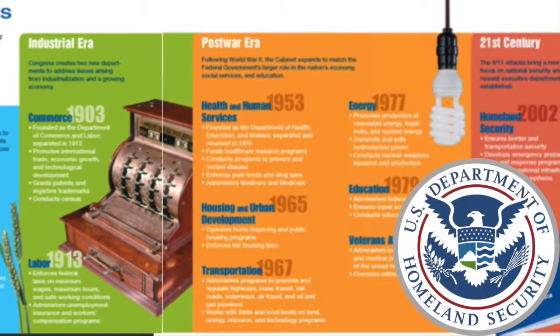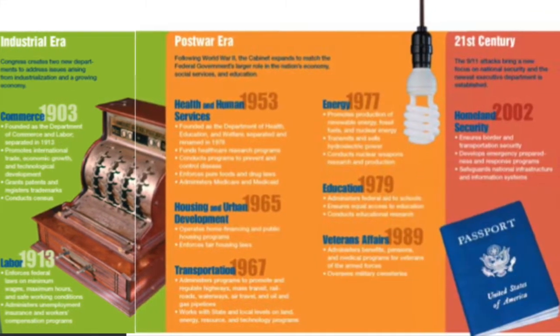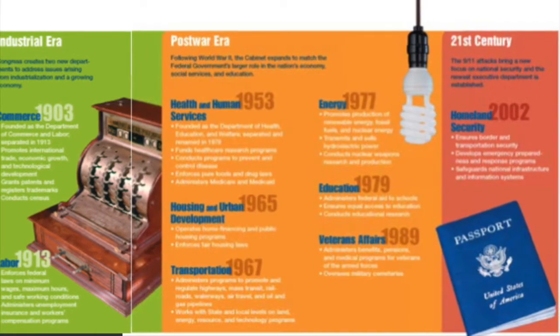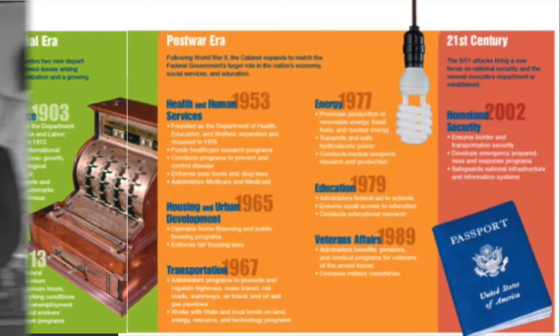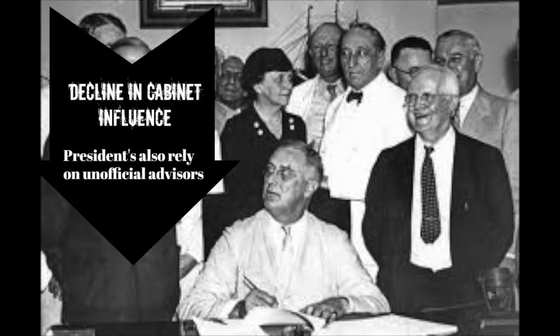The Department of Homeland Security became the newest of the executive departments when Congress created it in 2002. The importance of the cabinet has declined in recent years, due largely to the growth of the executive office of the president. However, no president has suggested getting rid of the cabinet, though they may rely more on unofficial advisors.